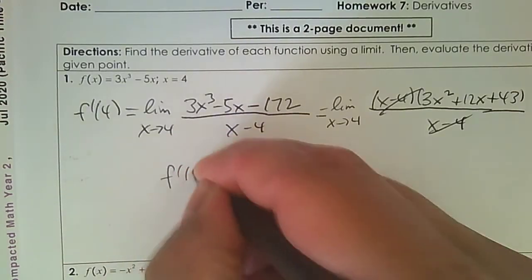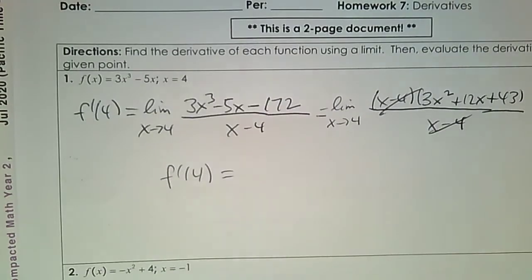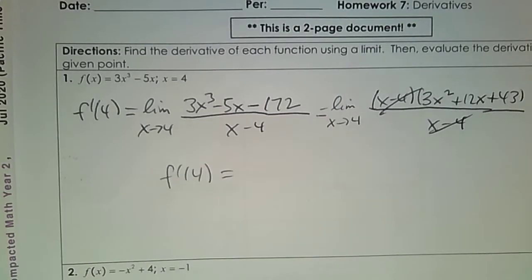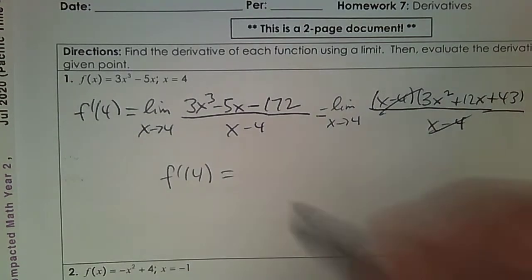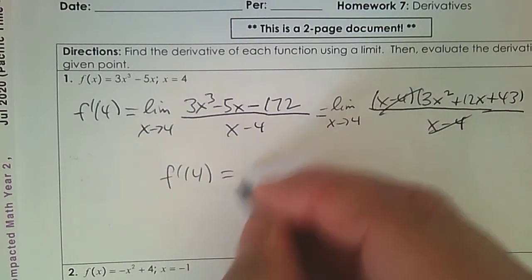And now just plug it in. I'm going to go 3 times 4 squared plus 12 times 4 plus 43, and I get 139.